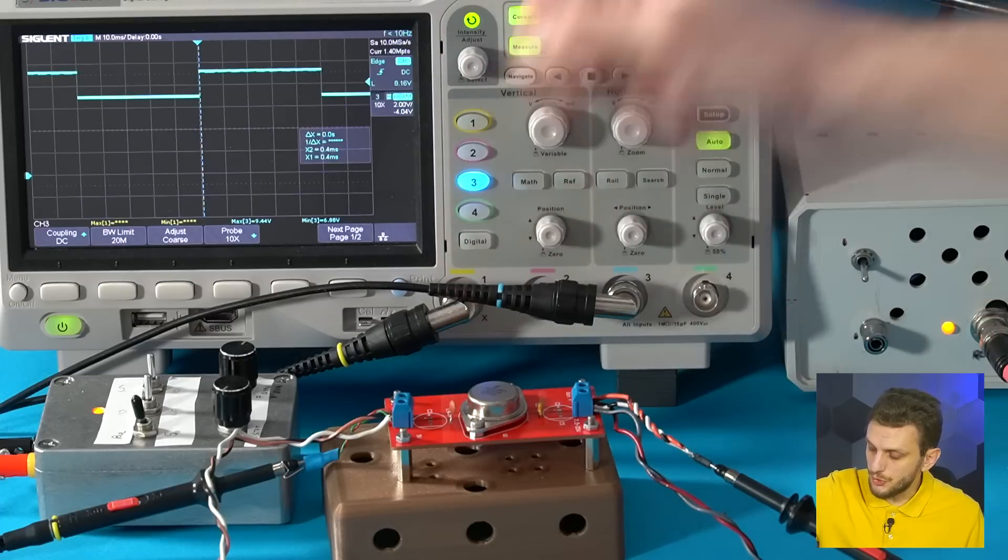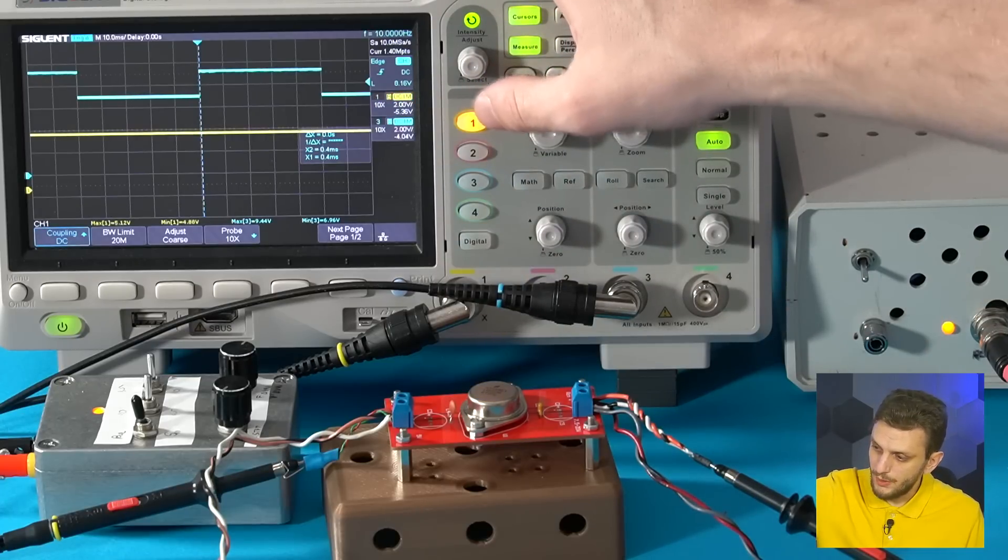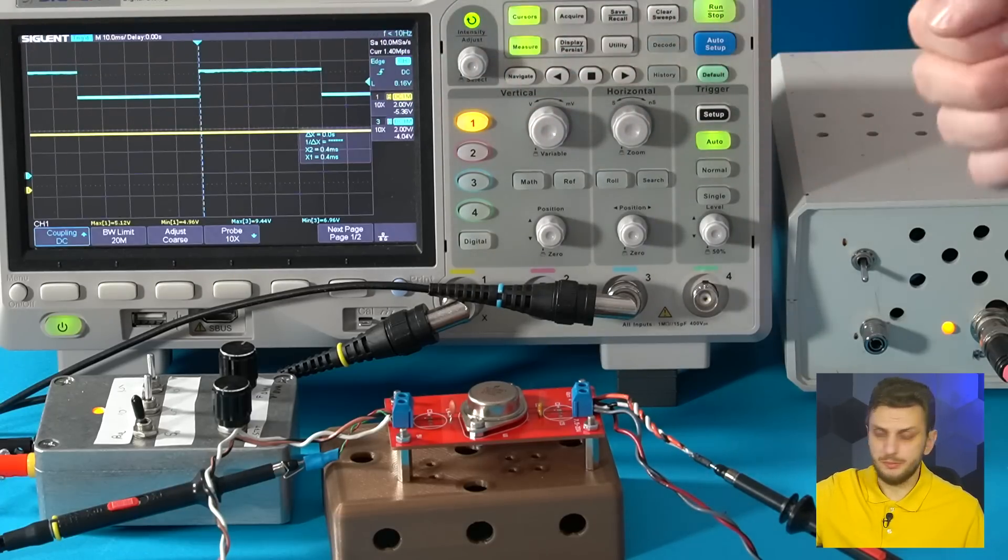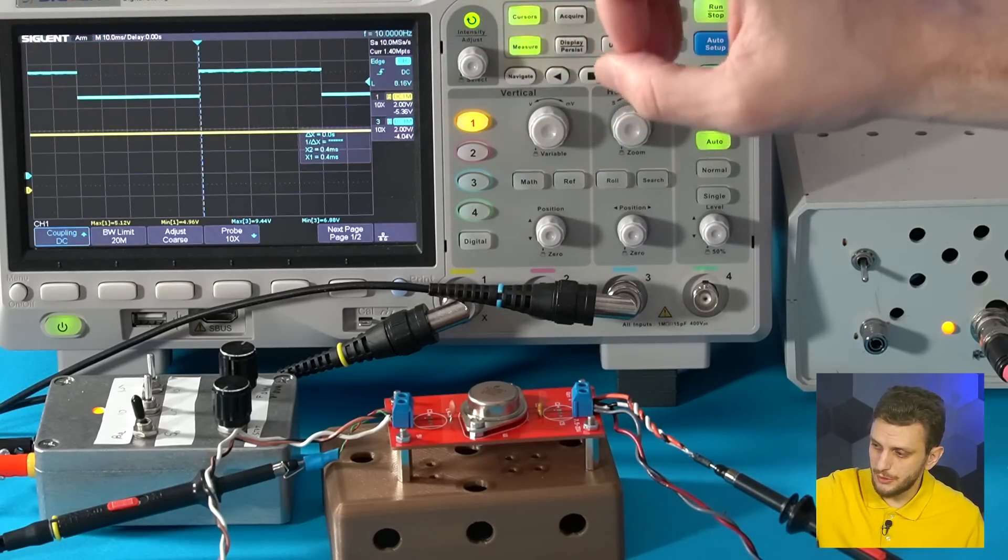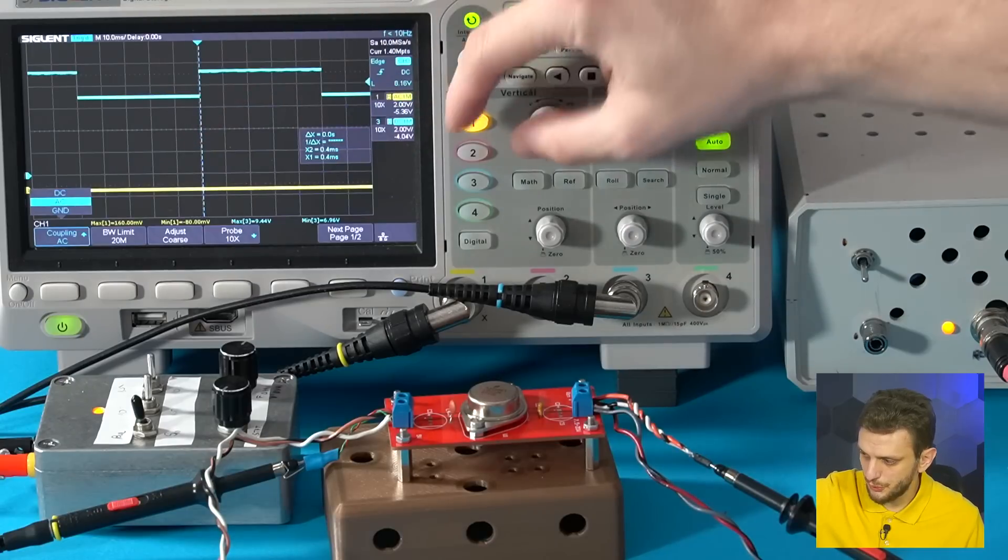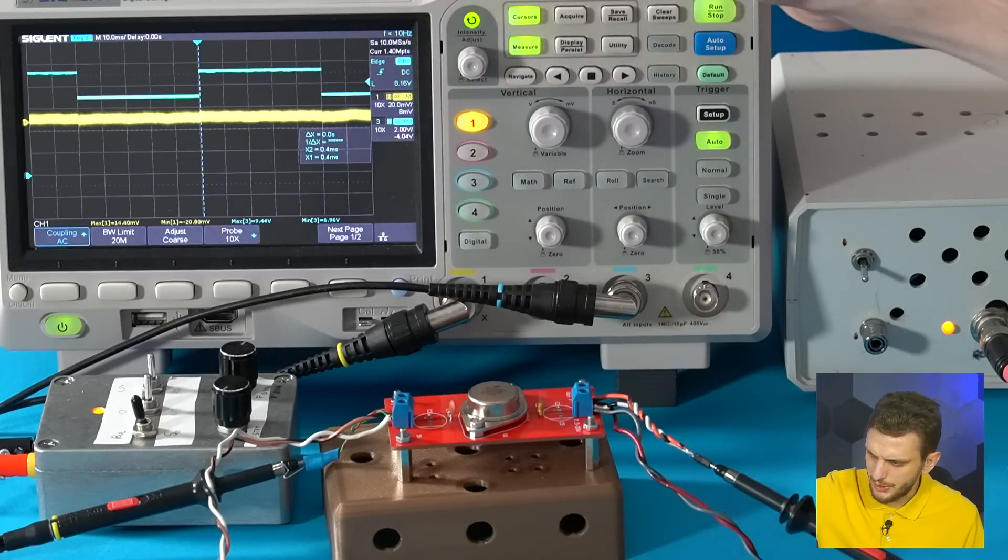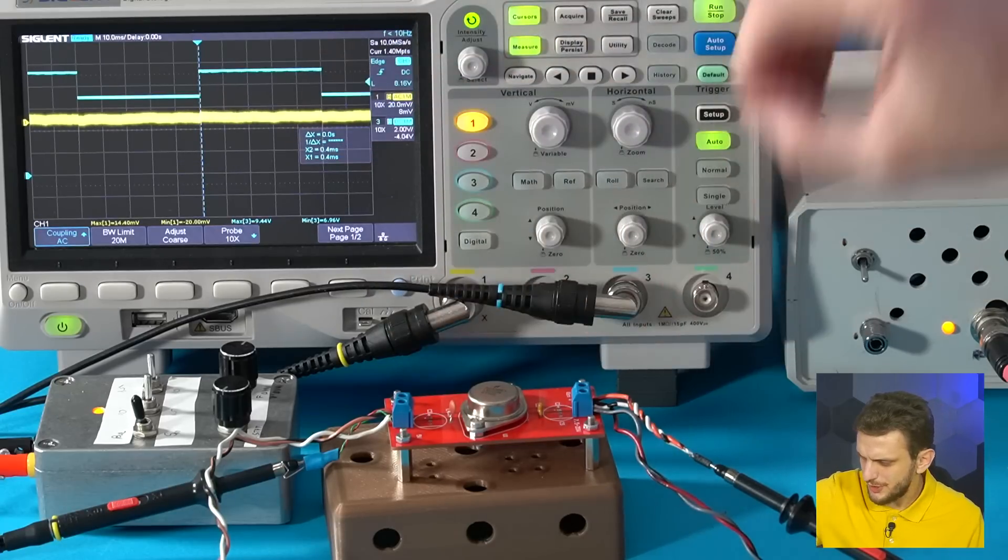So if we also start monitoring the output of the supply well we see it's a nice stable 5 volts so at least at 2 volts per division but to get a clearer picture we can switch to AC coupling and then zoom in a bit. So at about 20 millivolts per division we start to see something.